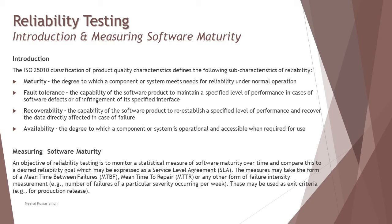The second part talks about measuring software maturity. An objective of reliability testing is to monitor a statistical measure of software maturity over time and compare it to a desired reliability goal, which may be expressed as a service level agreement (SLA). The measures may take the form of mean time between failure (MTBF), mean time to repair (MTTR), and other intensity measurements — such as hits per second not exceeding a throughput value. If all of these meet expectations, you call it a maturity measurement.